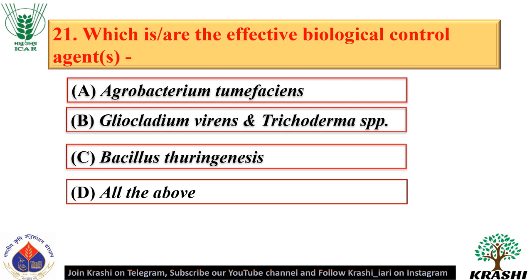Question number 21. Effective biological control agents include Agrobacterium tumefaciens, Gliocladium virens, Trichoderma species, and Bacillus thuringiensis. They are all biological control agents, so the answer is all of the above.